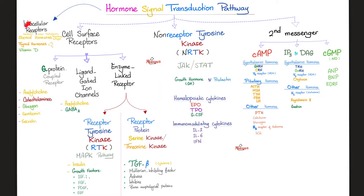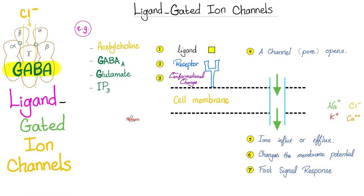We talked about the intracellular receptor — steroids, thyroid, vitamin D, vitamin A. These are lipid-soluble; they do not need a cell surface receptor. The receptor is on the inside because the hormone is lipid and will diffuse through the membrane until it finds the receptor inside the cell, in the cytoplasm or on the nucleus. We also talked about the cell surface receptor G-protein family. Next, let's talk about ligand-gated ion channels. GABA, acetylcholine, glutamate, and IP3 all work by ligand-gated ion channels.